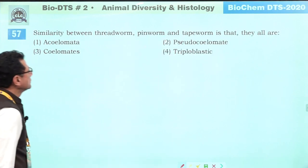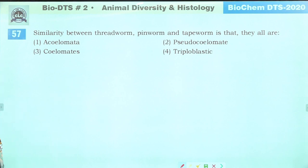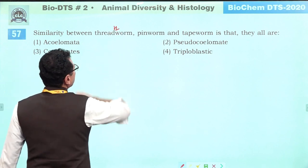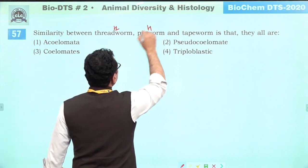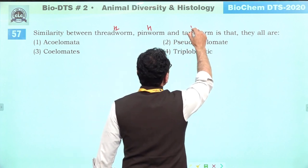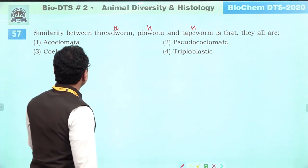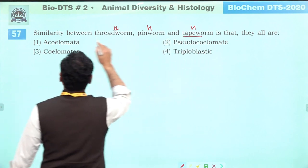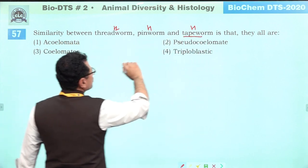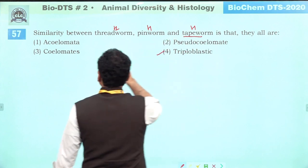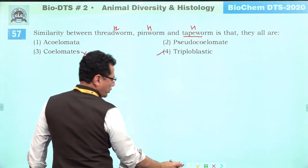Similarity between threadworm, pinworm, and tapeworm: threadworm and pinworm are helminths (Aschelminthes); tapeworm is Platyhelminthes. They are all triploblastic. They are not all schizocoelomata. The common feature is that they are all triploblastic. Answer is four.